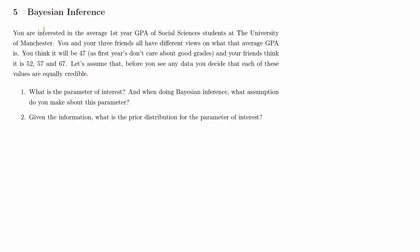So here's a question on Bayesian inference. Let's say you're interested in the first year GPA of a set of students at the University of Manchester, and you and your three friends are sort of thinking about it. You think the average is 47, and your three friends have different opinions. So let's call that average mu. First question is, what is the parameter of interest?